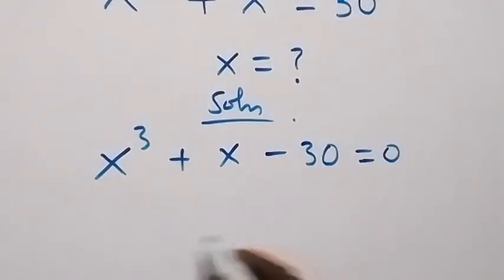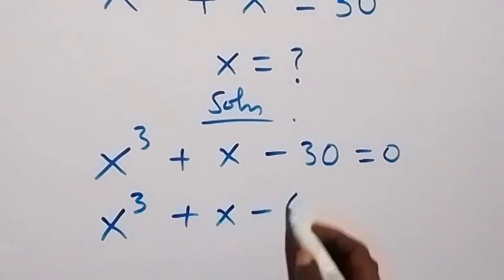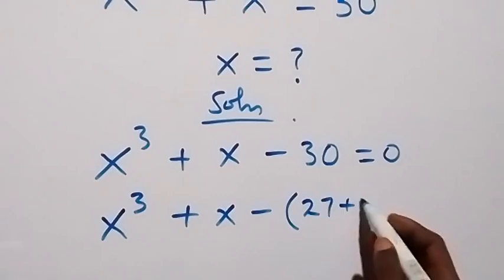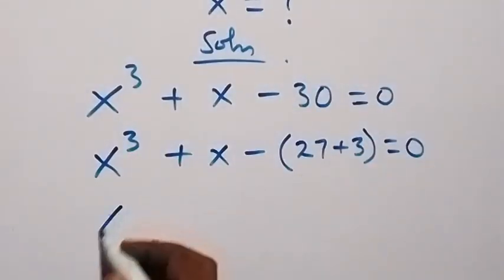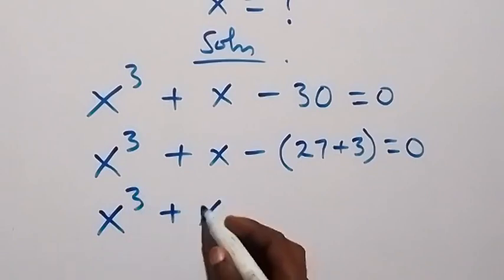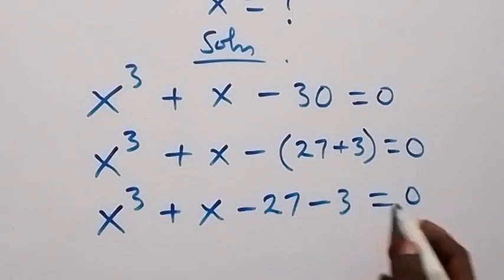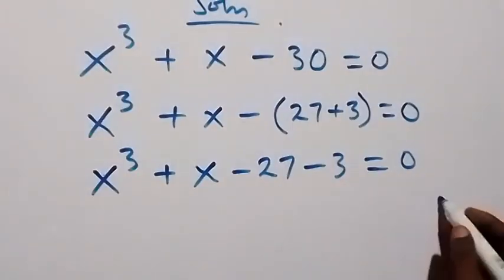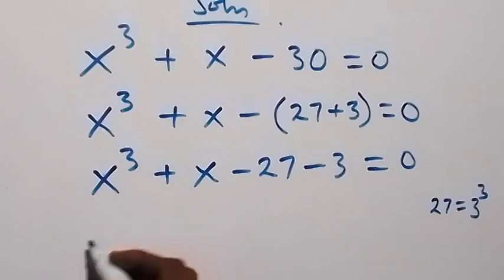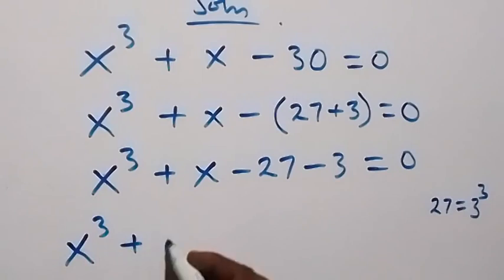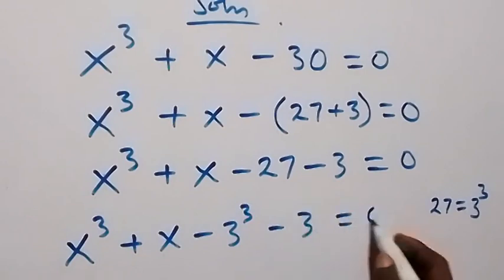Here we can write 30 as 27 plus 3. That is, we have x raised to the power 3 plus x, then minus bracket 27 plus 3, then equals to 0. Expanding, this becomes x raised to the power 3 plus x minus 27 minus 3 equals to 0. Now 27 we can write as 3 raised to the power 3, so this becomes x raised to the power 3 plus x minus 3 raised to the power 3 minus 3, equals to 0.